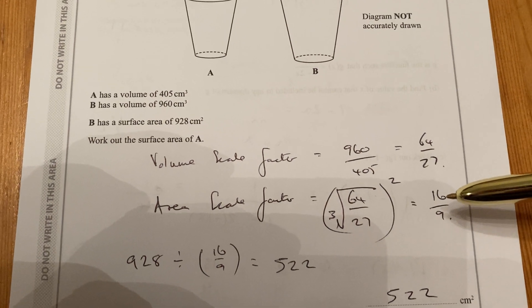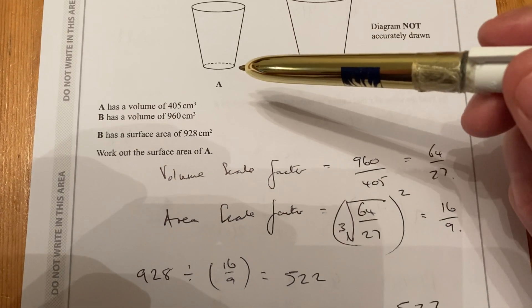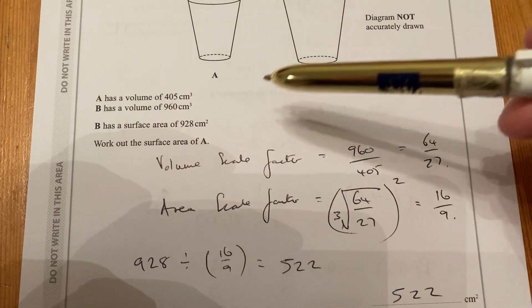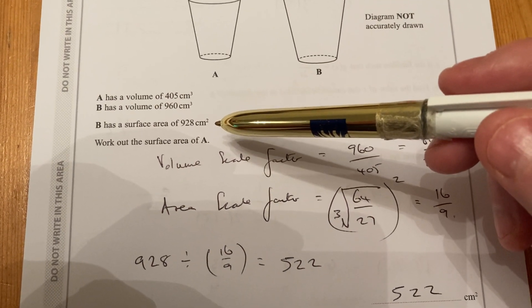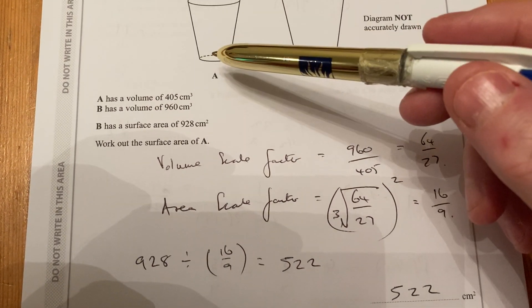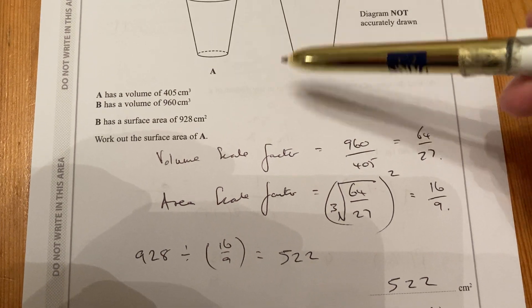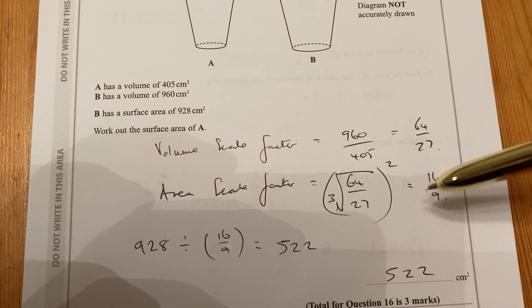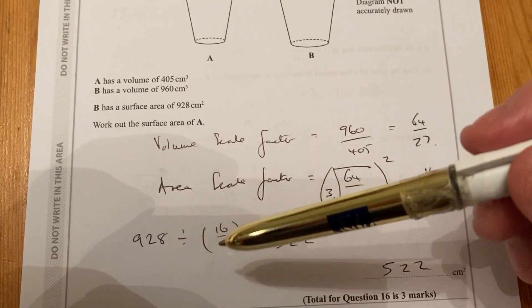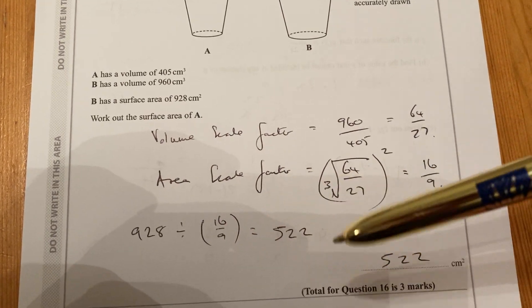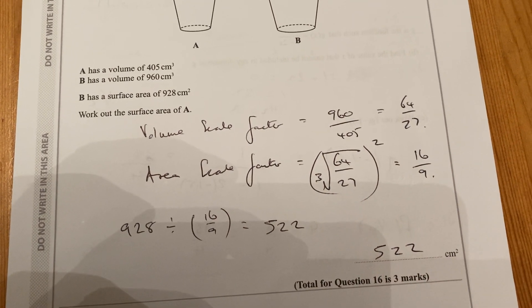So that scale factor is when you are going from A to B. Now, I'm given the surface area for B, so if I want to go back to A, rather than multiplying it, I need to divide by 16 over 9. So 928 divided by 16 over 9, 522 centimeters squared.